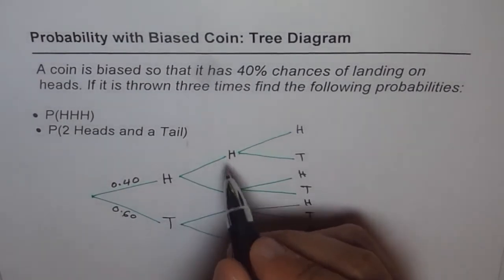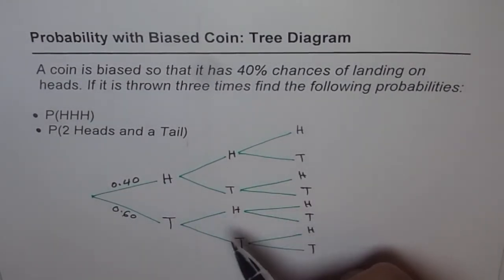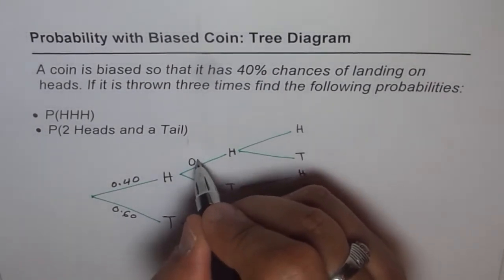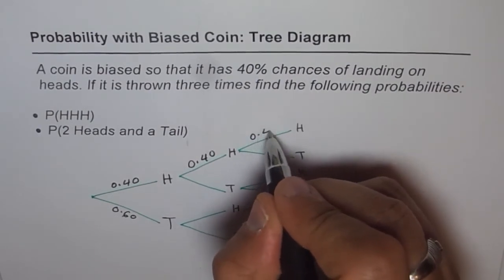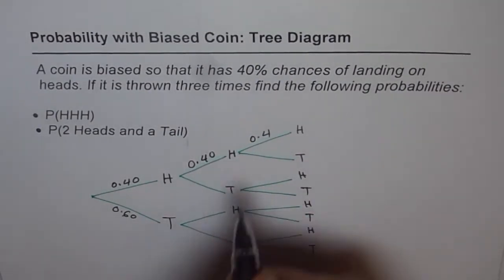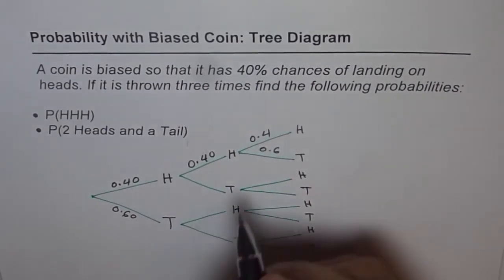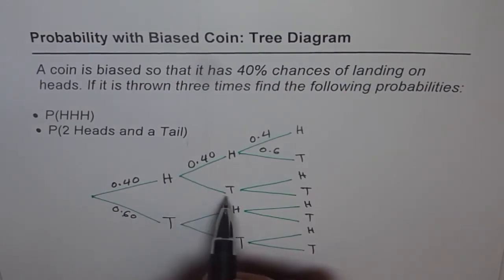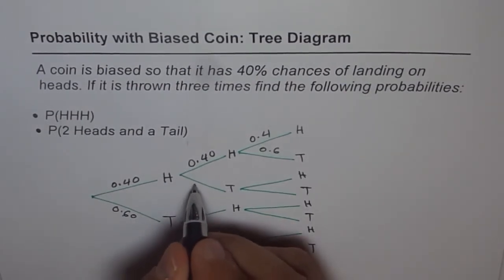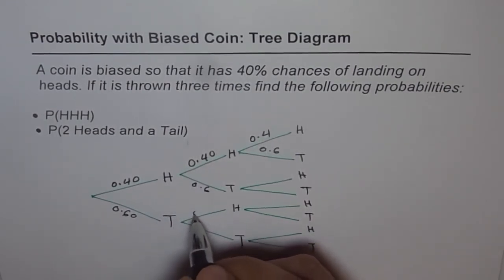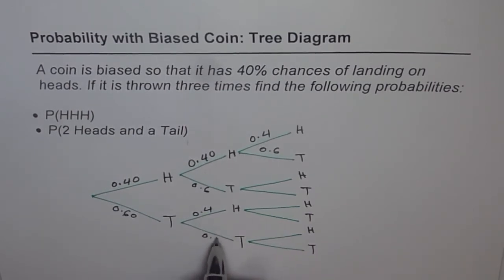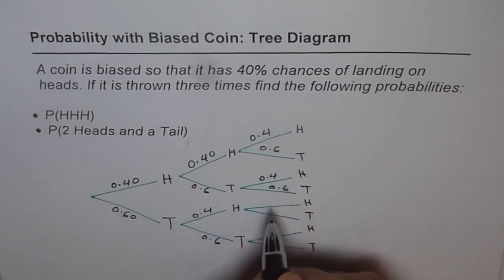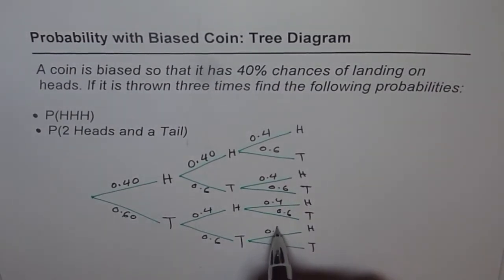Now filling in from the head branch: since each toss is an independent event with the same coin, getting a head is 0.4 and getting a tail is 0.6 on every branch throughout the tree. So for all branches at every level, head is 0.4 and tail is 0.6.